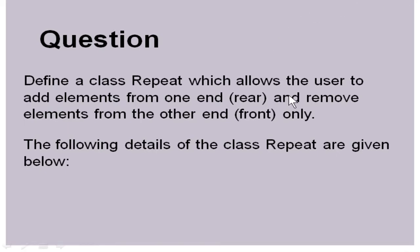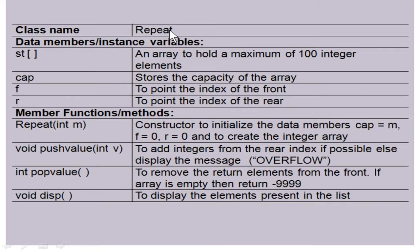Now we look at the class 'repeat' details. The class name is 'repeat' and it has some data members. The first data member is array variable 'st' which can hold up to a maximum of 100 integer elements. The second data member is 'cap' which shows the capacity of the array. The third data member is 'F' to point to the index of the front, and the next data member is 'R' to point to the index of the rear. These two variables F and R are very important as they determine whether the queue is full, empty, or the current position of elements.